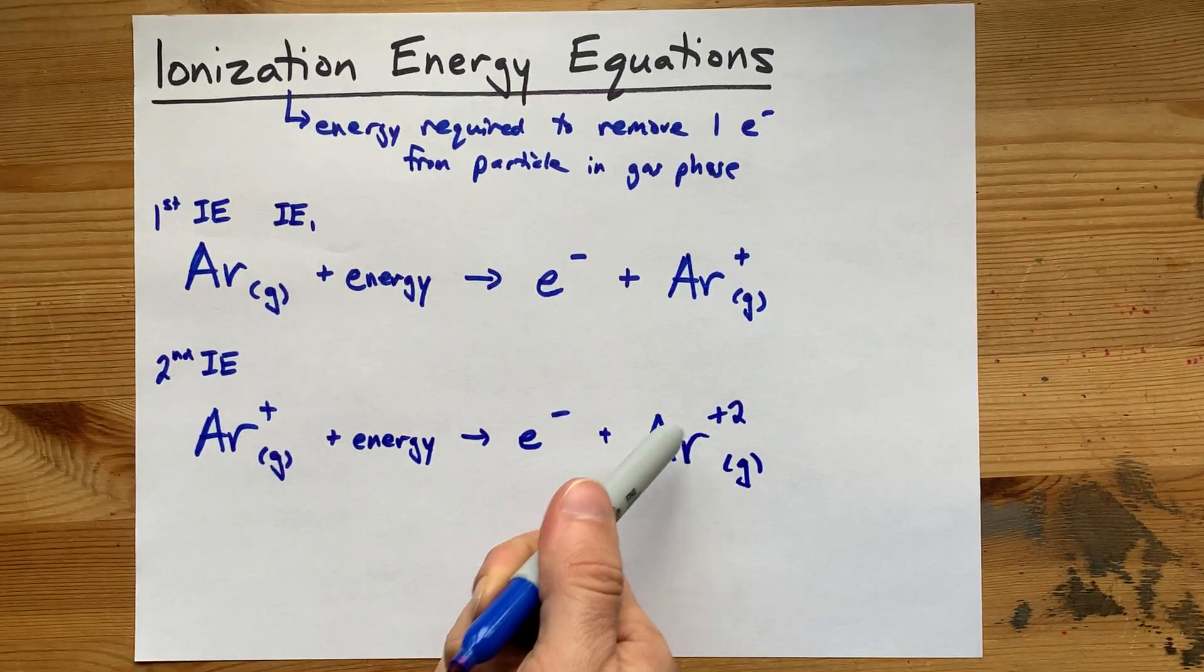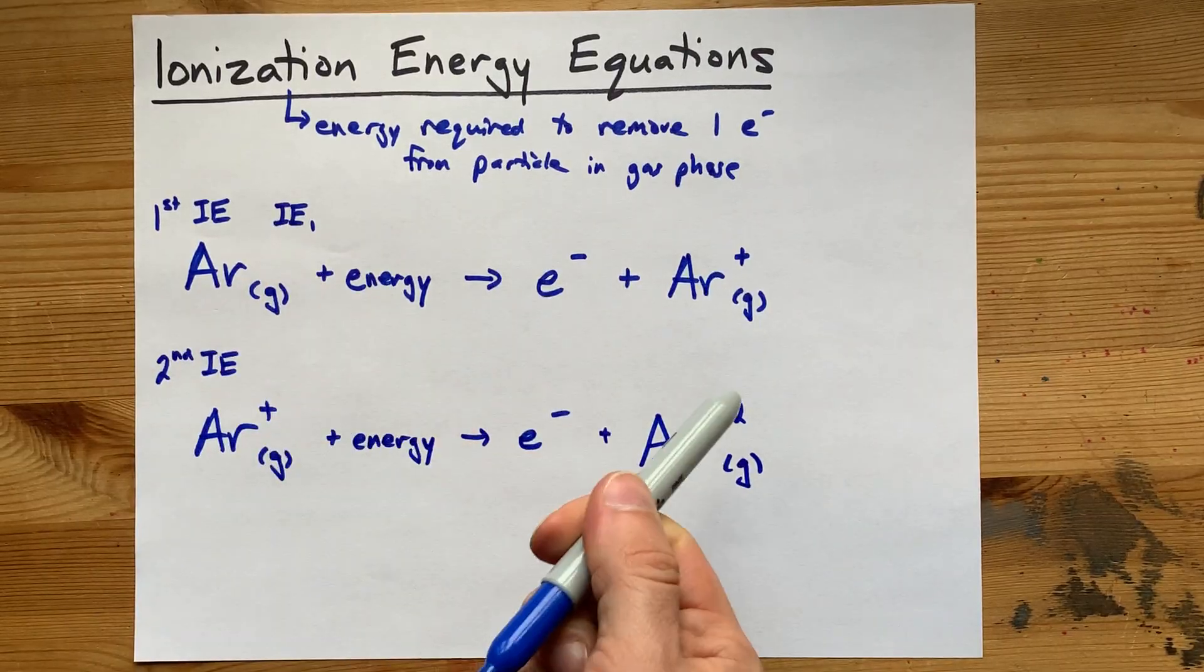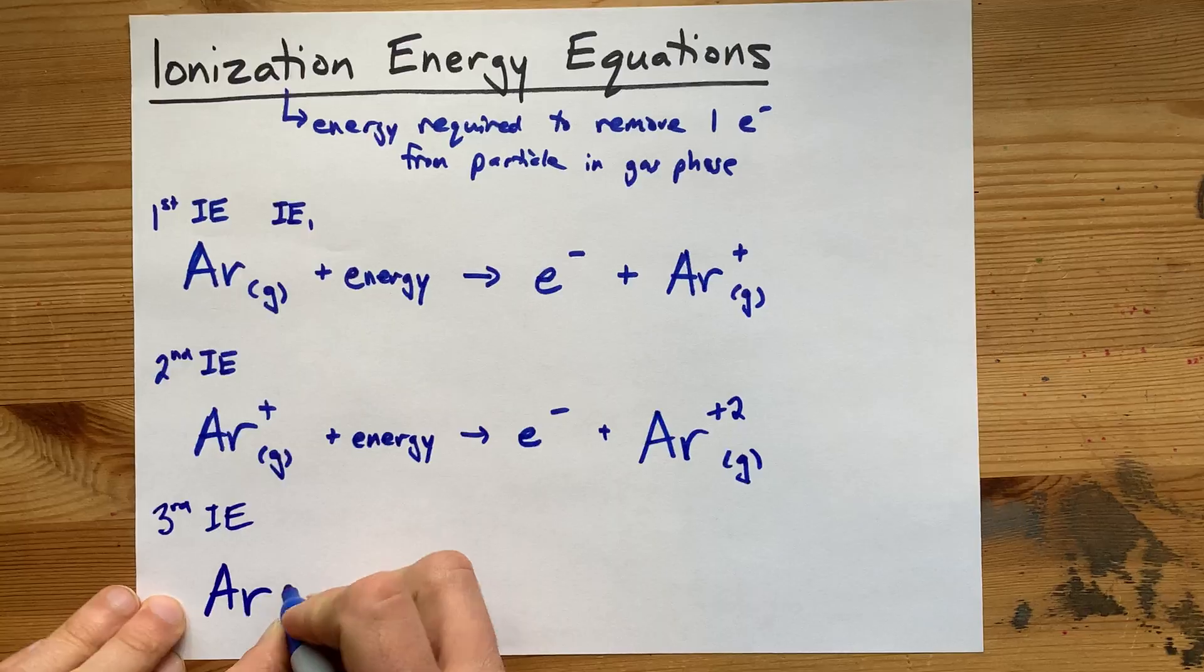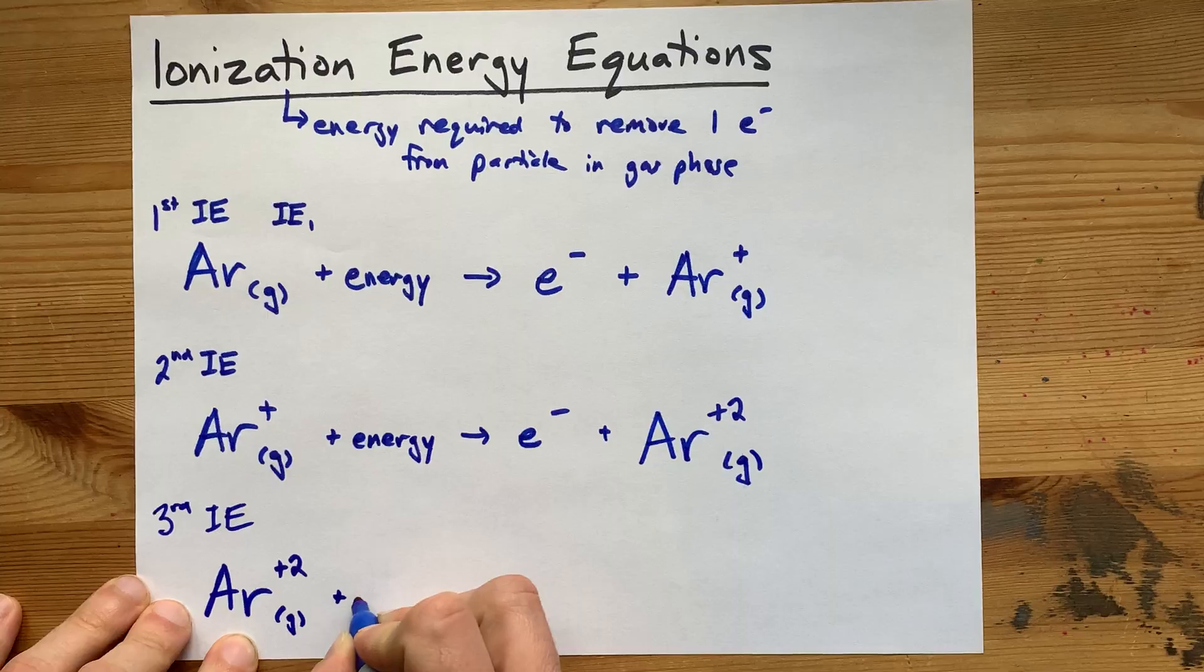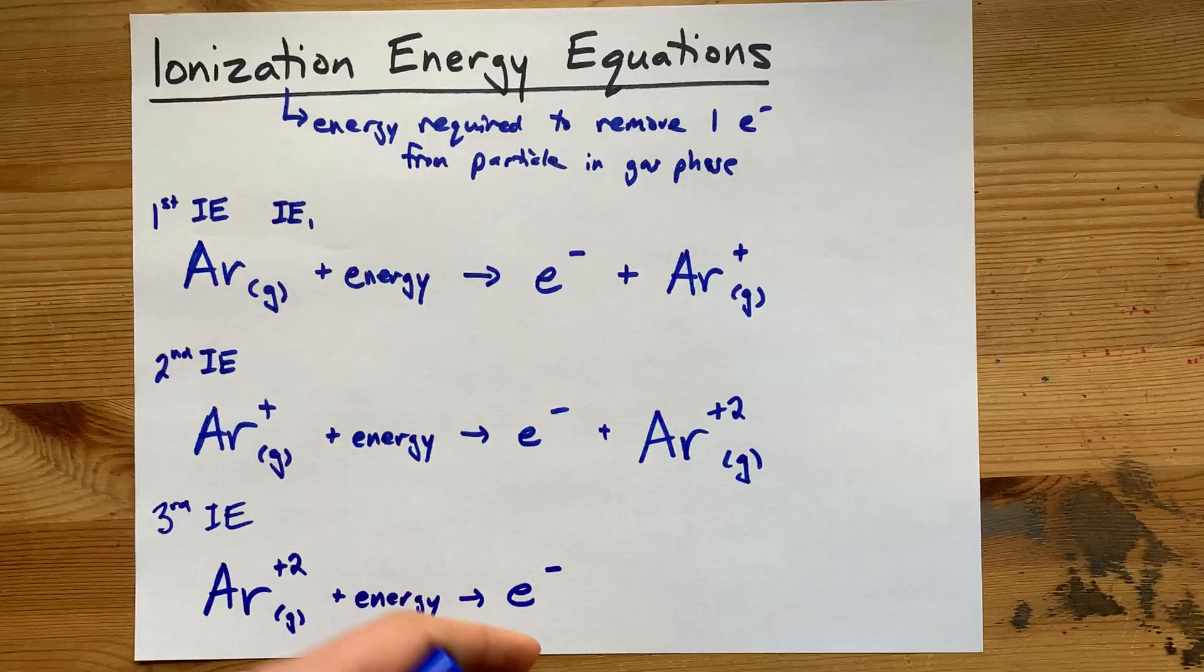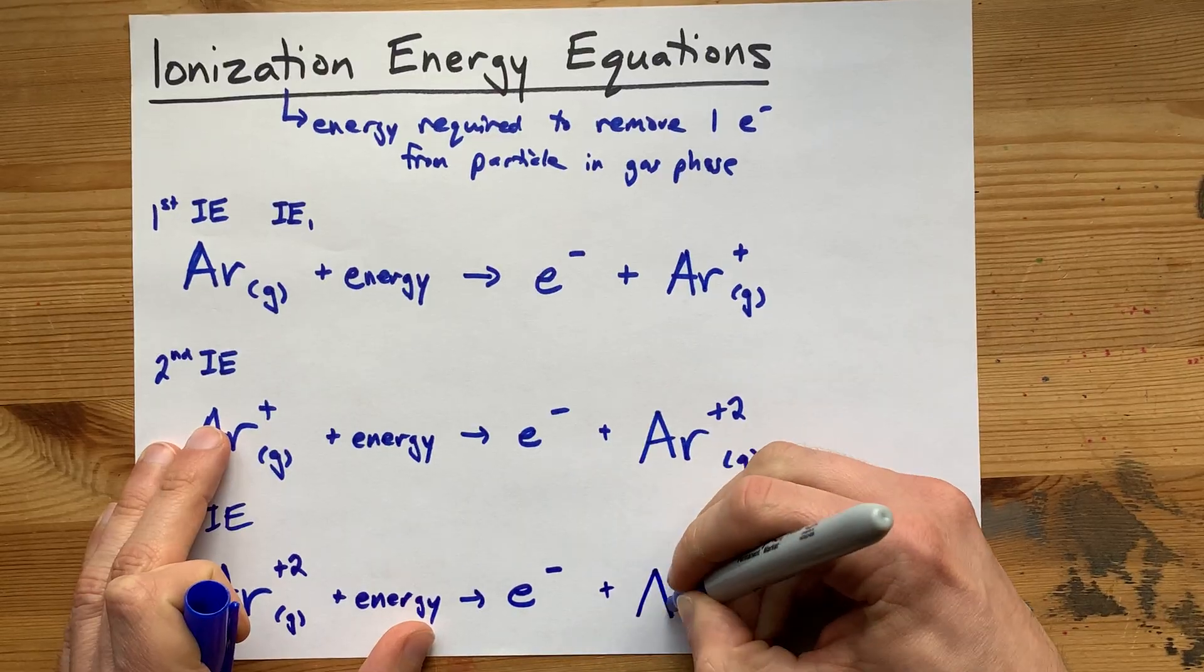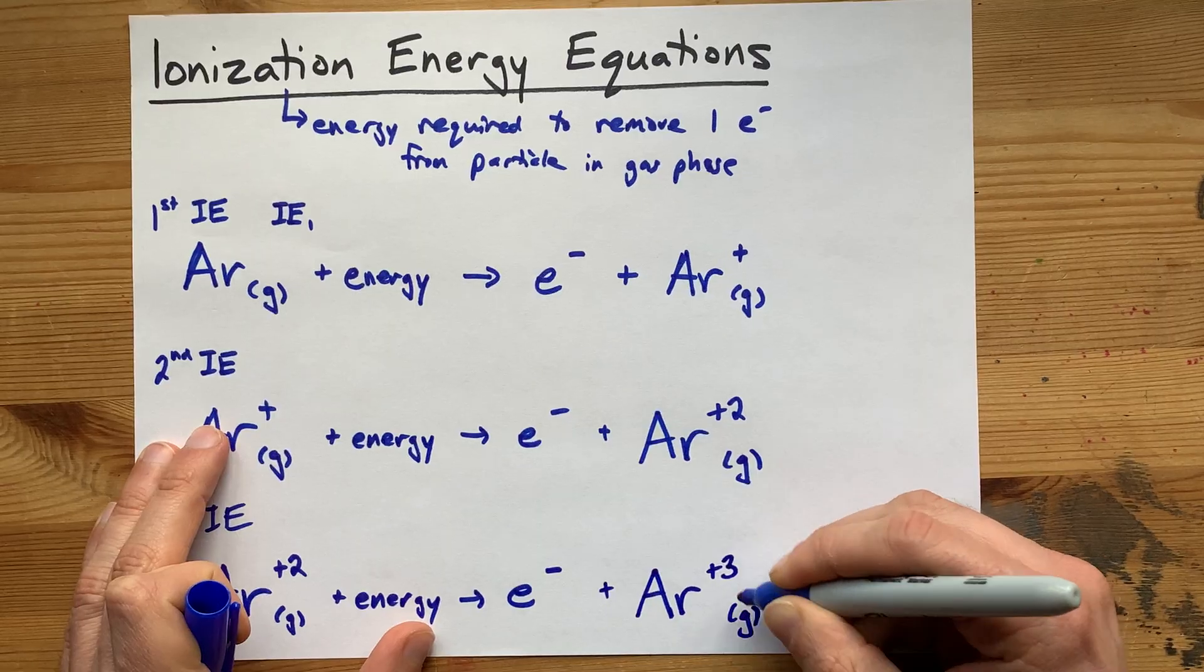I know argon doesn't want a charge of plus 2, but if you put in enough energy, you can pluck out all the electrons you want. Case in point, third ionization energy. Start with that particle having lost 2 electrons. Add energy. An electron is the product. What really matters is that you're left with Ar⁺³ this time because you have now lost a third electron.